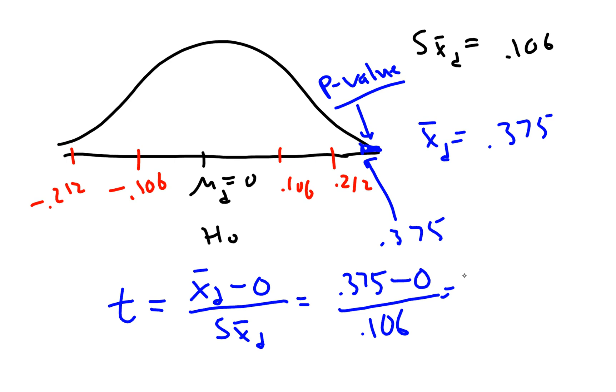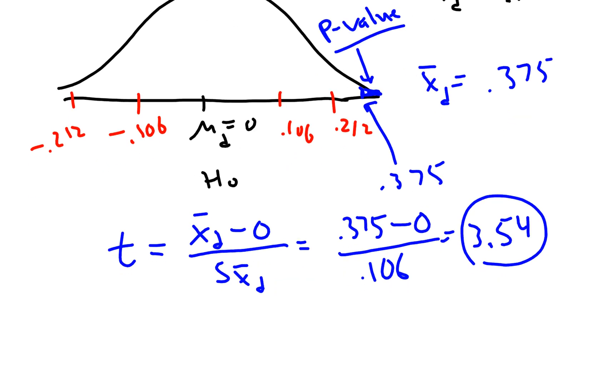That's telling us how many standard deviations we are away from the mean. So 0.375 divided by 0.106 gives us 3.54. That's actually quite a few standard deviations away. This is probably going to be a significant result.